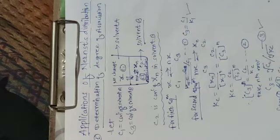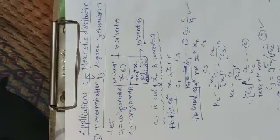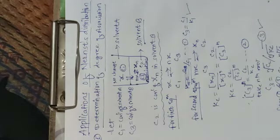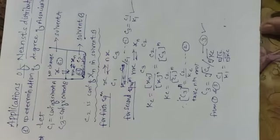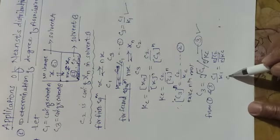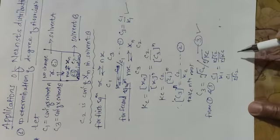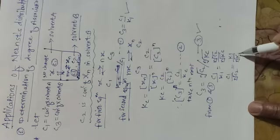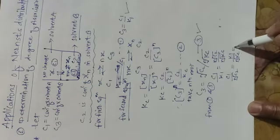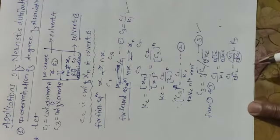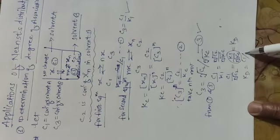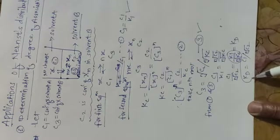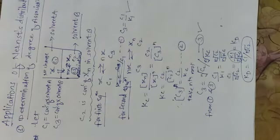Comparing equation 1 and equation 3: c1/k1 = (c2)^(1/n) / (kc)^(1/n). After further solving, c1 divided by the nth root of c2 equals k1 divided by the nth root of kc, which equals the distribution coefficient kd. Therefore, kd = c1 / (c2)^(1/n), where c1 is the concentration of solute X in solvent A and c2 is the concentration of associated molecules Xn in solvent B.